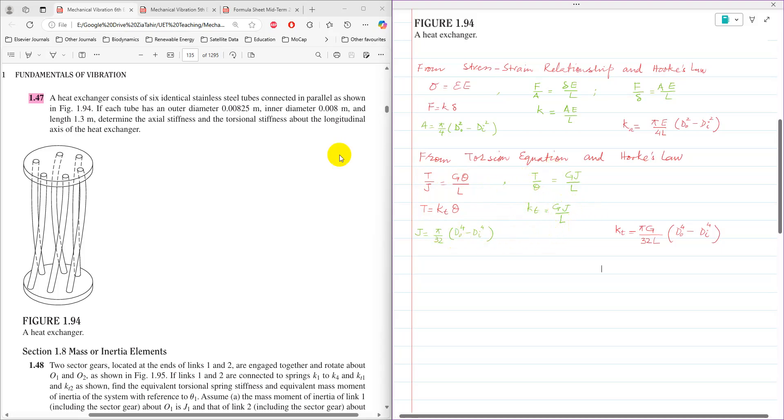Because it is a hollow tube, polar moment of inertia of hollow tube is pi by 32, D_O raised to the power 4 minus D_I raised to the power 4. The expression becomes K_T equals pi G over 32L times D_O raised to the power 4 minus D_I raised to the power 4.